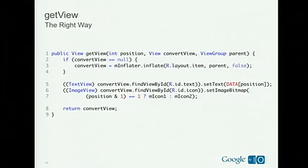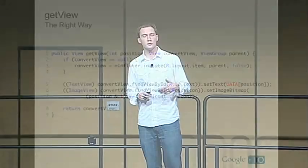To fix this, simply reuse the ConvertView: check whether it's null; if null, create a new view by inflating from XML or programmatically; otherwise, just reuse it. We guarantee the ConvertView is the type of view you want, so you know you'll have your TextView and ImageView. With this method you allocate only the number of views needed to fill the screen — maybe seven or eight views on the Nexus One. This is much faster.